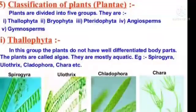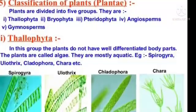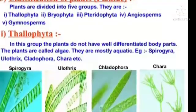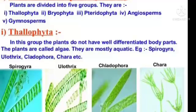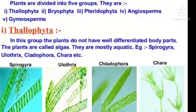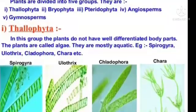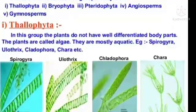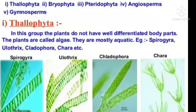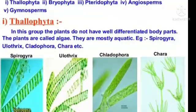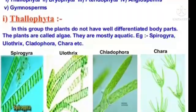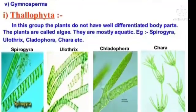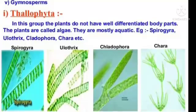Classification of Plants. Plants are divided into 5 groups: Thallophyta, Bryophyta, Pteridophyta, Gymnosperms, and Angiosperms. First, Thallophyta: in this group, the plants do not have well-differentiated body parts. The plants are called algae. They are mostly aquatic. Examples: Spirogyra, Ulothrix, Cladophora, Chara, etc.